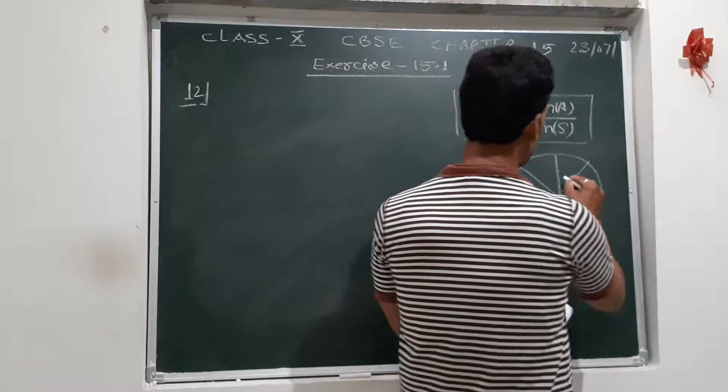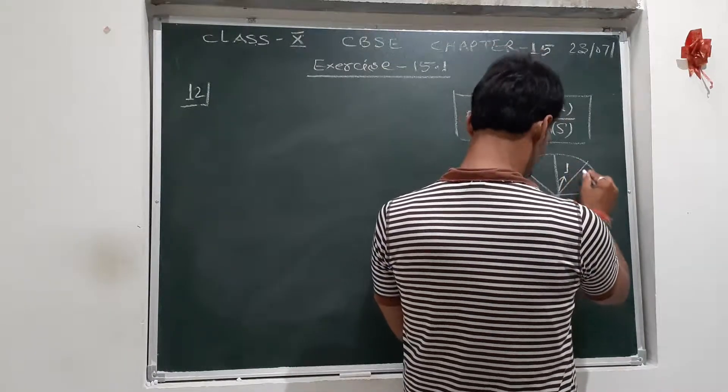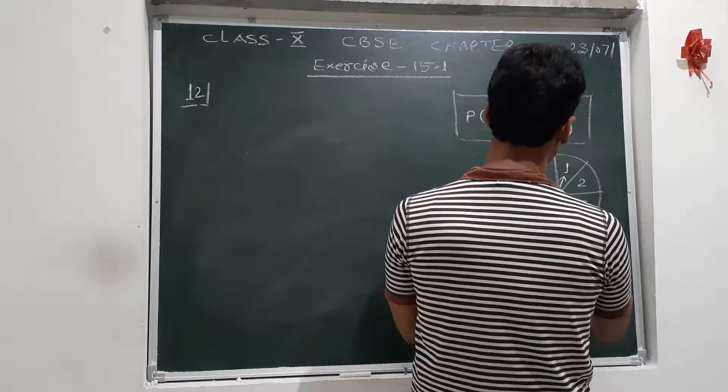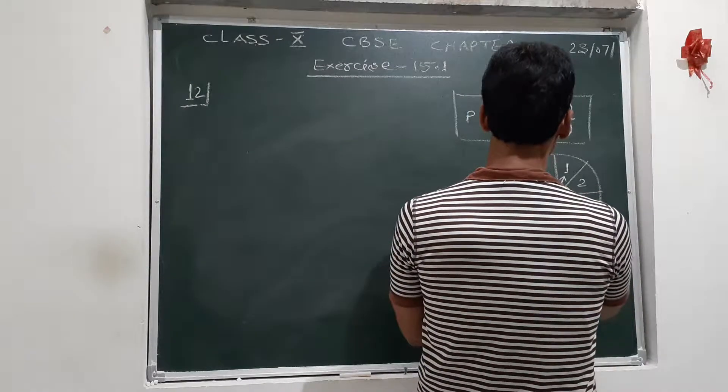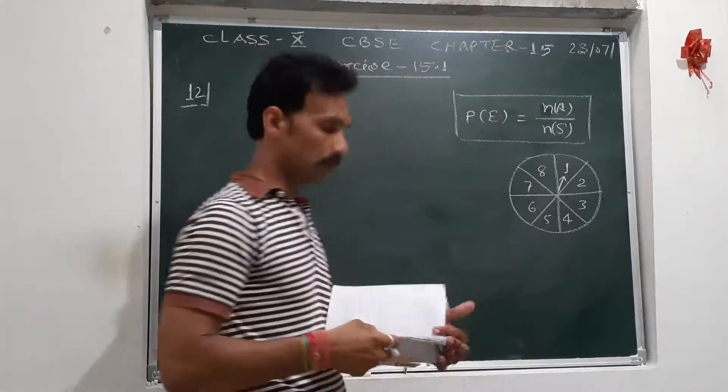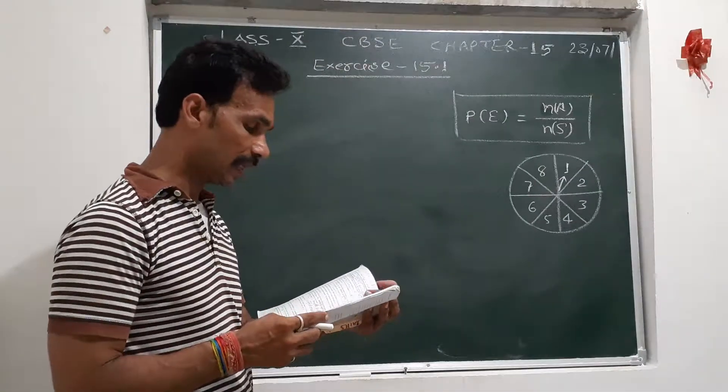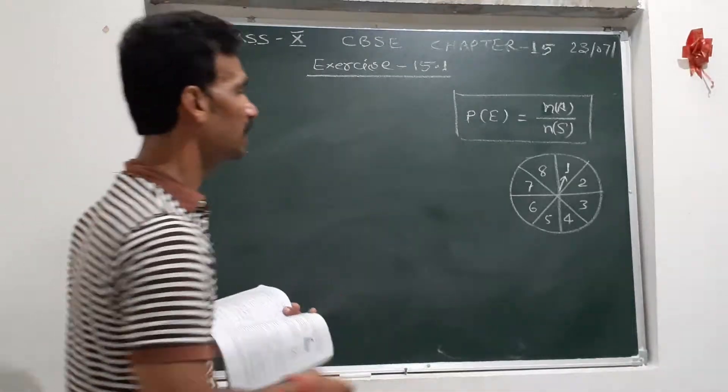The arrow comes to rest pointing at one of the numbers: one, two, three, four, five, six, seven, eight.